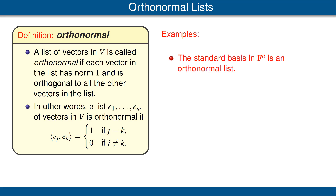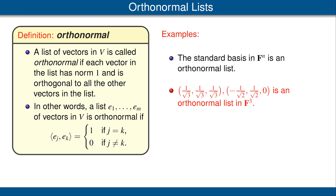Let's look at some examples. For our first example, the standard basis in F^n is an orthonormal list, where we are using the standard inner product on F^n. For our second example, we'll use the standard inner product on F^3. The claim is the list shown here is an orthonormal list. Two things need to be verified: first, that each vector has norm 1 — squaring each coordinate and adding gives 1 — and second, that the two vectors are orthogonal, which we verify by computing their inner product, which gives 0. Thus, this is indeed an orthonormal list in F^3.